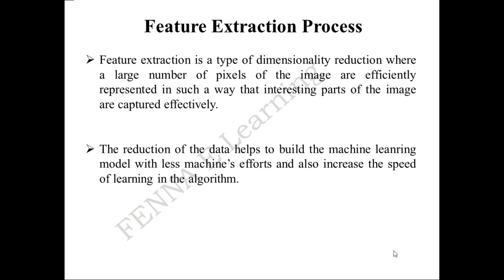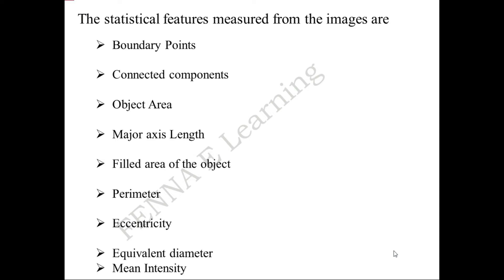In the next step, features are extracted from the leaf images. Feature extraction is a type of dimensionality reduction where a large number of pixels of the image are efficiently represented so that the interesting parts of the images are captured effectively. The reduction of data helps to build the machine learning model with less effort and increases the speed of learning in the algorithm. The statistical features measured from the leaf images are: boundary points, connected components, object area, major axis length, filled area of the object, perimeter, eccentricity, equivalent diameter, and mean intensity.